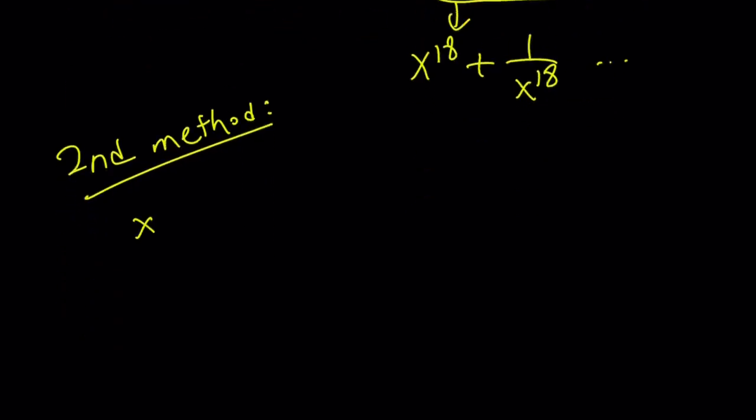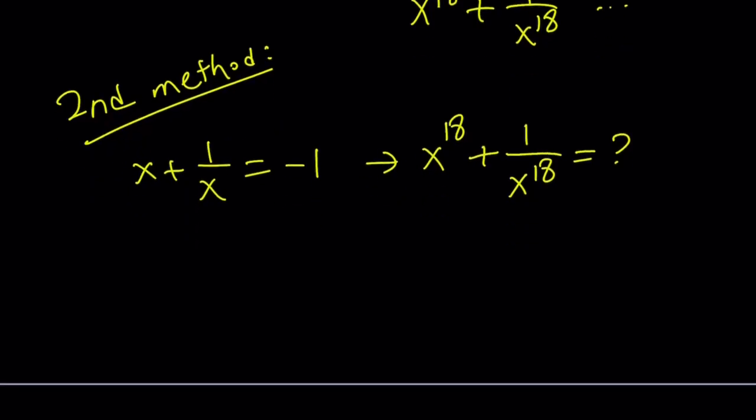So we're given again x plus 1 over x equals negative 1, right? And we're trying to evaluate x to the power 18 plus 1 over x to the power 18. Now, these kinds of expressions are very common in math competitions and Olympiads. That's why it's important to know these identities or how to work with them. Okay, so here's how my second method works. I want to get to the 18th power by raising this original expression to different powers. And here's one way to get there.